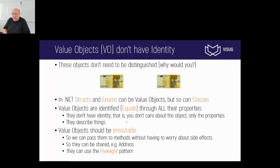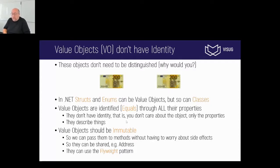In .NET, we can use structs to implement a value object. We can use enumerations, but we can also use classes. In domain-driven design, a lot of people like to use classes because it has advantages. When are two value objects equal? They're only equal if their full state is equal. 200 euro is equal to 200 euro, but 200 euro is not equal to 200 dollars. So the amount and the currency have to be the same, meaning we have to implement equals for these value objects to compare every property in that object.